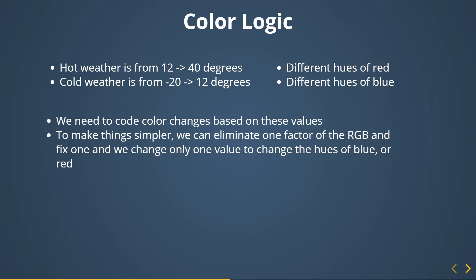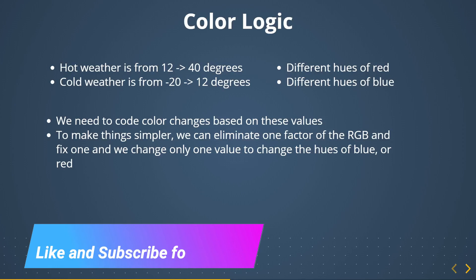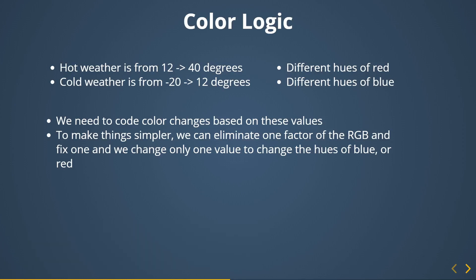To keep things simple, I'm going to eliminate one factor of RGB. We're using RGB — red, green, blue — where each value goes from 0 to 255. I'll fix one channel, eliminate another, and use the temperature variable from the API in a formula to calculate the remaining variable.